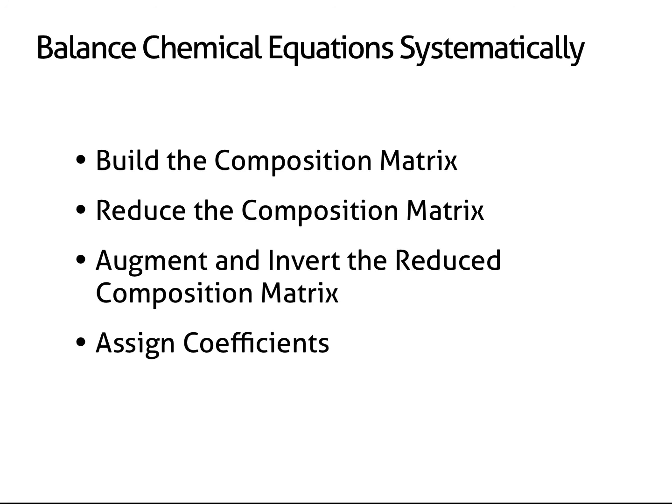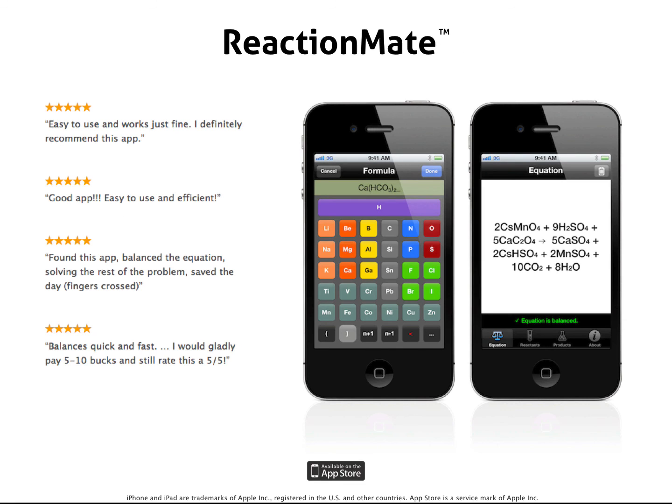Although no step is particularly difficult, this method does require a lot of arithmetic. Fortunately, an app is available that can do these calculations for you. ReactionMate is an app that uses the method described in this video to balance chemical equations. Just add your reactants and products. The rest is calculated automatically. ReactionMate handles even the most complicated chemical equations easily. You can download a copy of ReactionMate for your iPhone or iPad from the App Store.